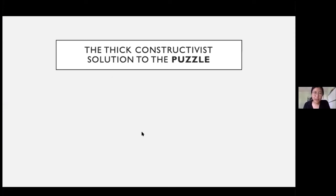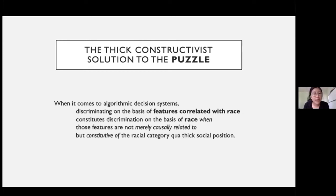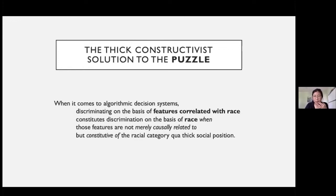So what is the cash value of this? With these theoretical resources in place, I claim we can elaborate a causal analysis of discrimination on the basis of race that answers the puzzle I set forth at the beginning. We need to understand how race acts as a cause in the right way — the way advanced by the thick constructivist account. When it comes to algorithmic decision systems, discriminating on the basis of features correlated with race constitutes discriminating on the basis of race when those features are not merely causally related to, but constitutive of, the racial category qua thick social position.